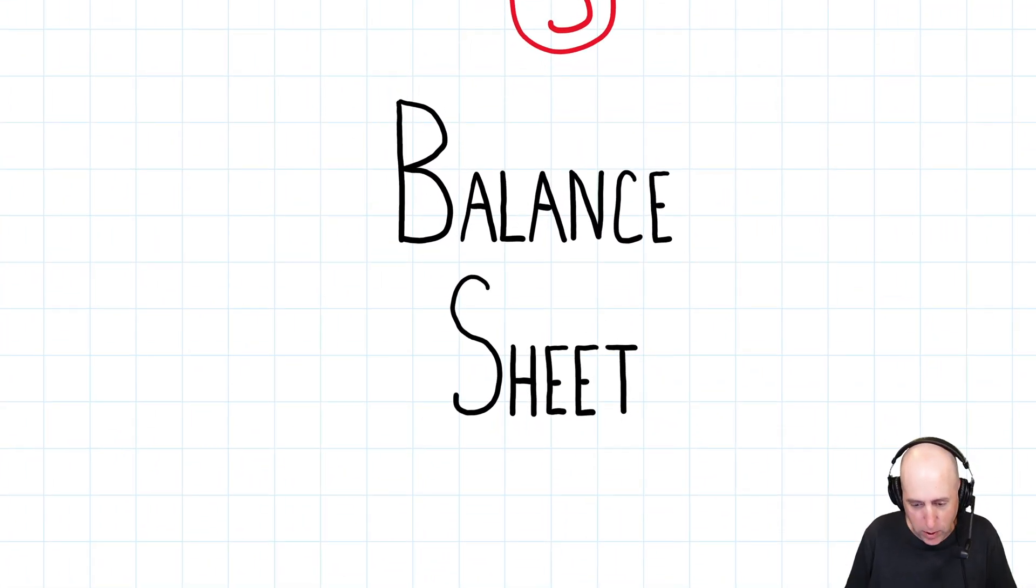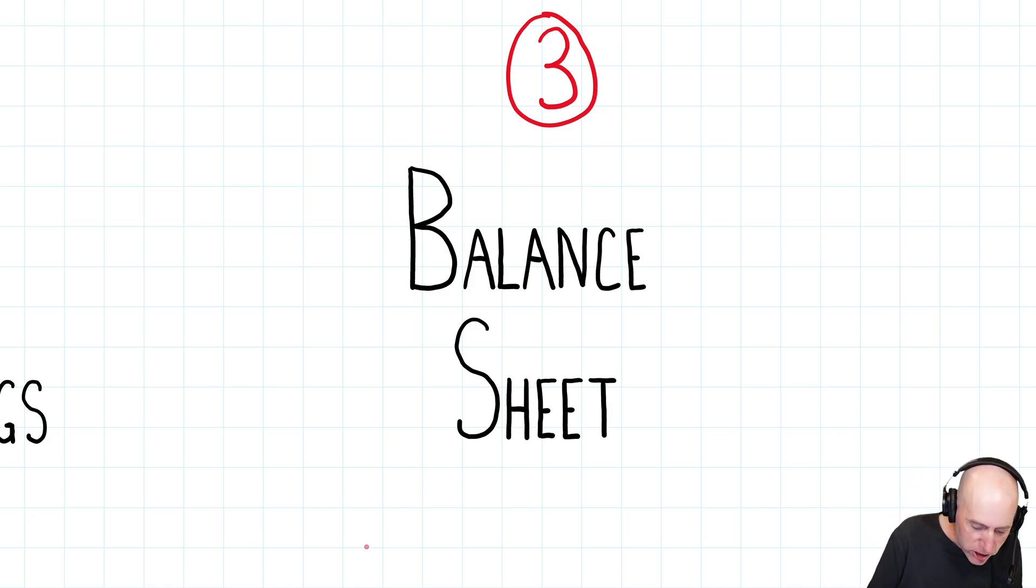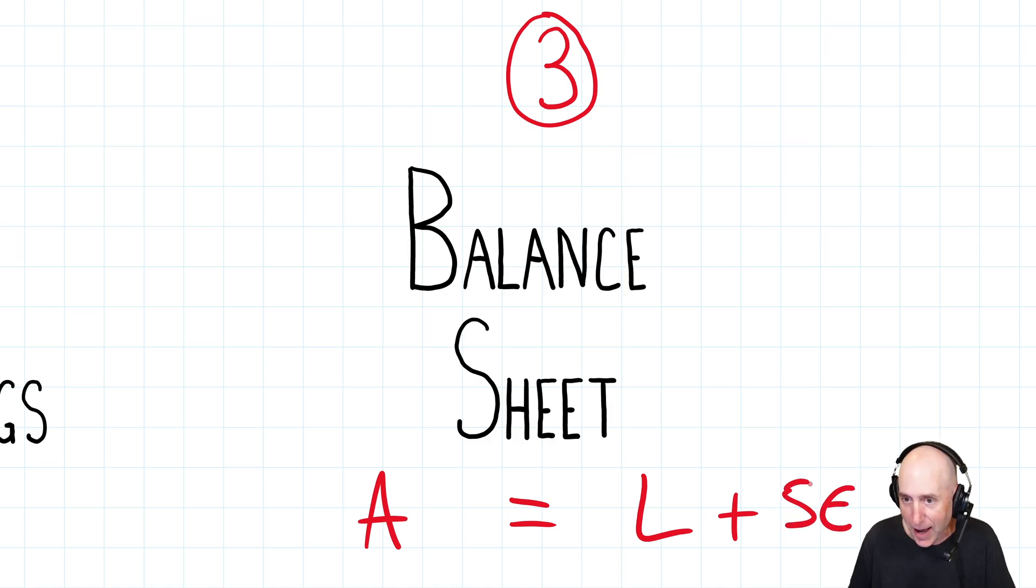The third statement we're going to look at is the balance sheet. And the balance sheet captures the accounting equation. A equals L plus SE, assets equals liabilities plus shareholders equity. And so we'll do the balance sheet. And you'll see it's not too difficult to calculate, although formatting it can be tricky. But the usefulness of the balance sheet is, does this company have enough assets to pay the bills? What kind of financial position is the company in? Are they going to be in trouble? Are they going to run out of money next year? I would learn that by looking at the balance sheet.